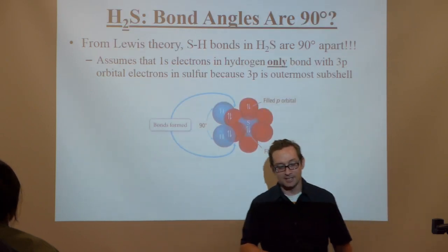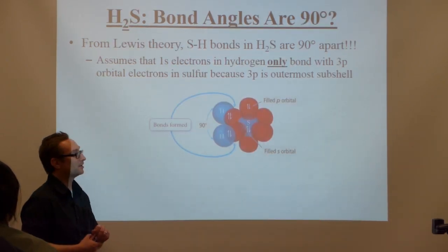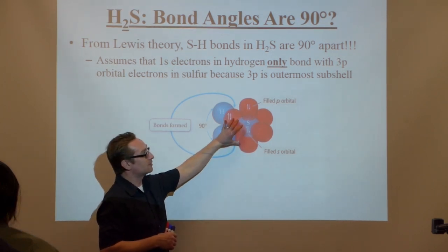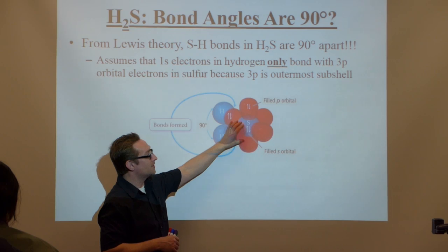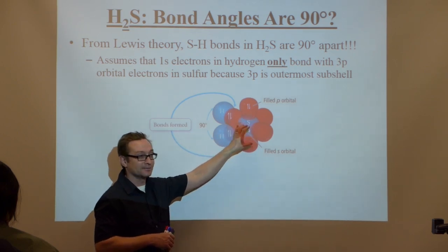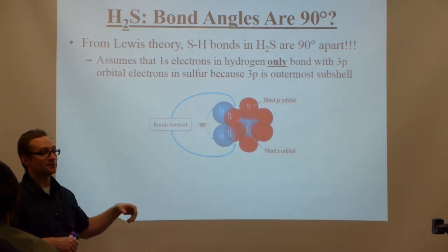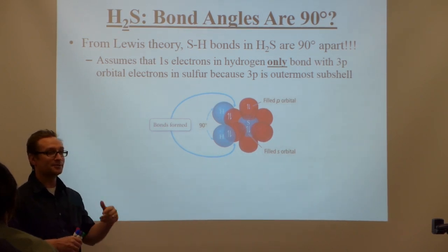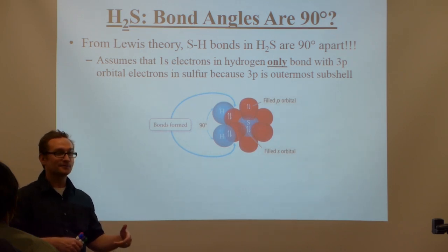For example, if I look at hydrogen sulfide — H₂S — the electron configuration for sulfur is 1s², 2s², 2p⁶, 3s², 3p⁴.